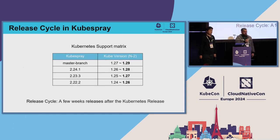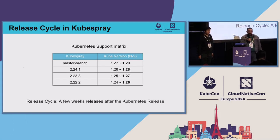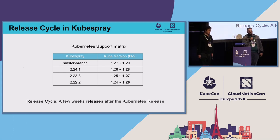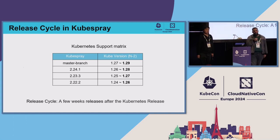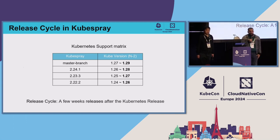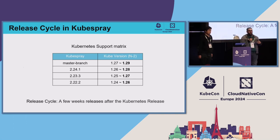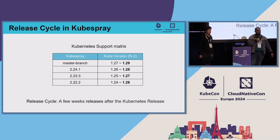Here are the release cycle details. These are the current supported versions of KubeSpray. We do semantic releases when there are fixes or new releases for major components like Kubernetes itself, containerd, or Calico. Sometimes we do patch releases for bug fixes or security fixes — these are the current releases you can use.